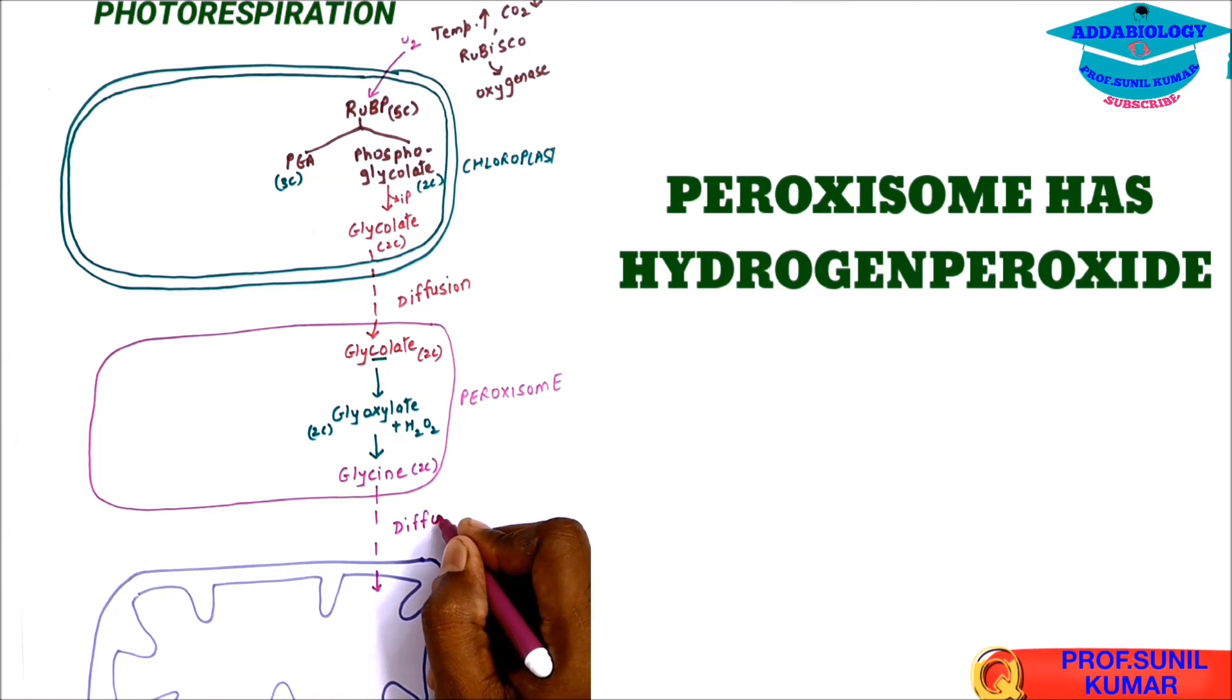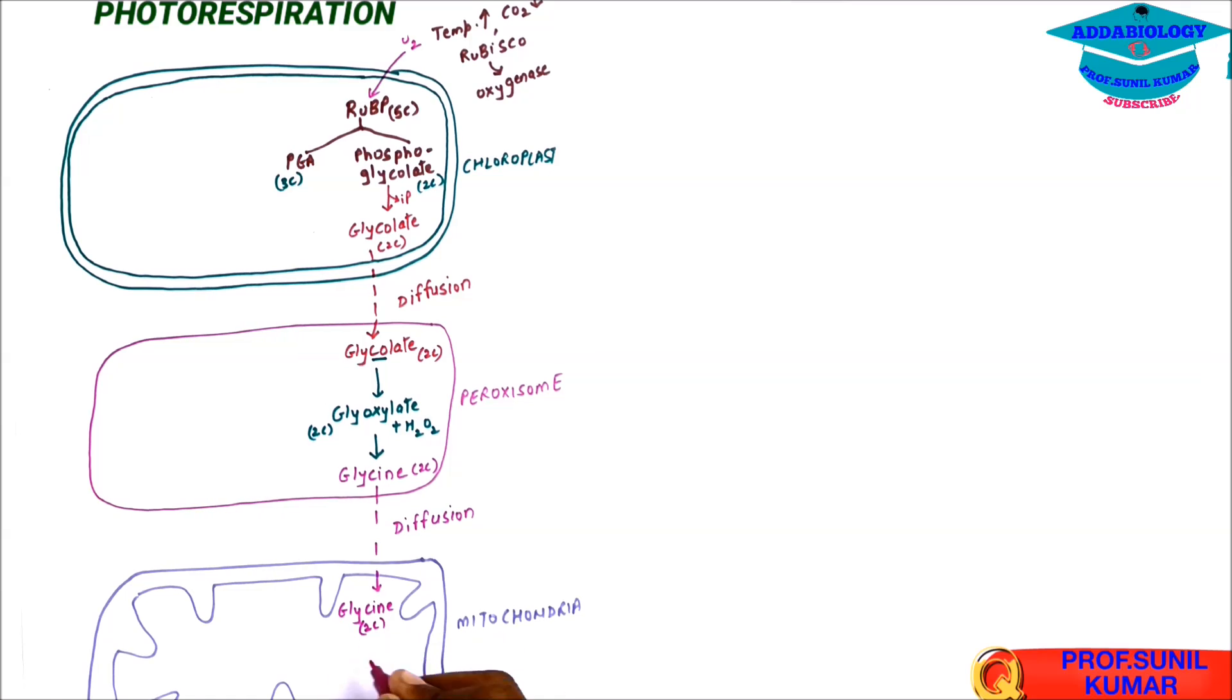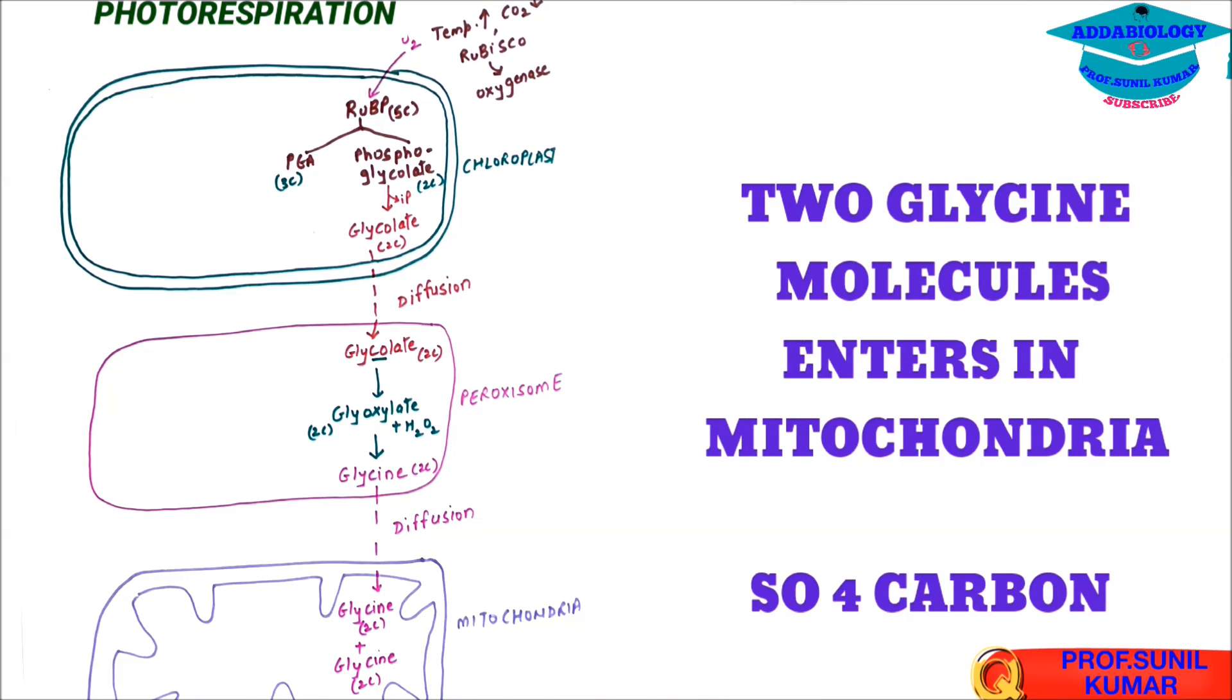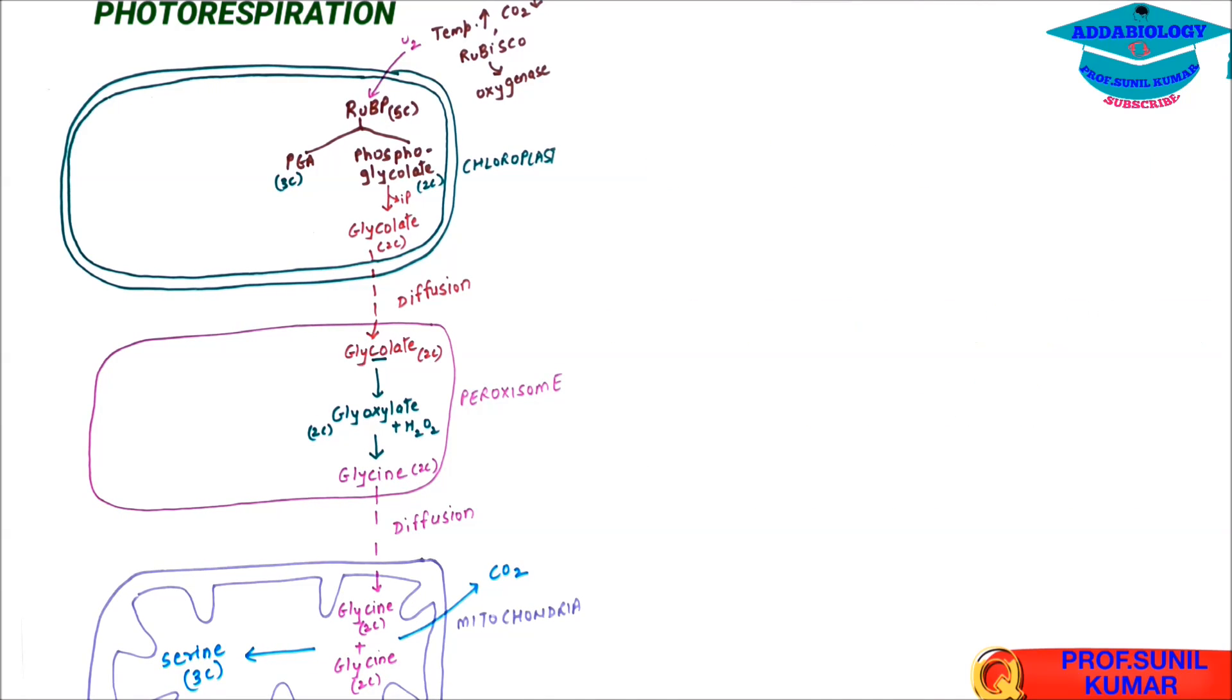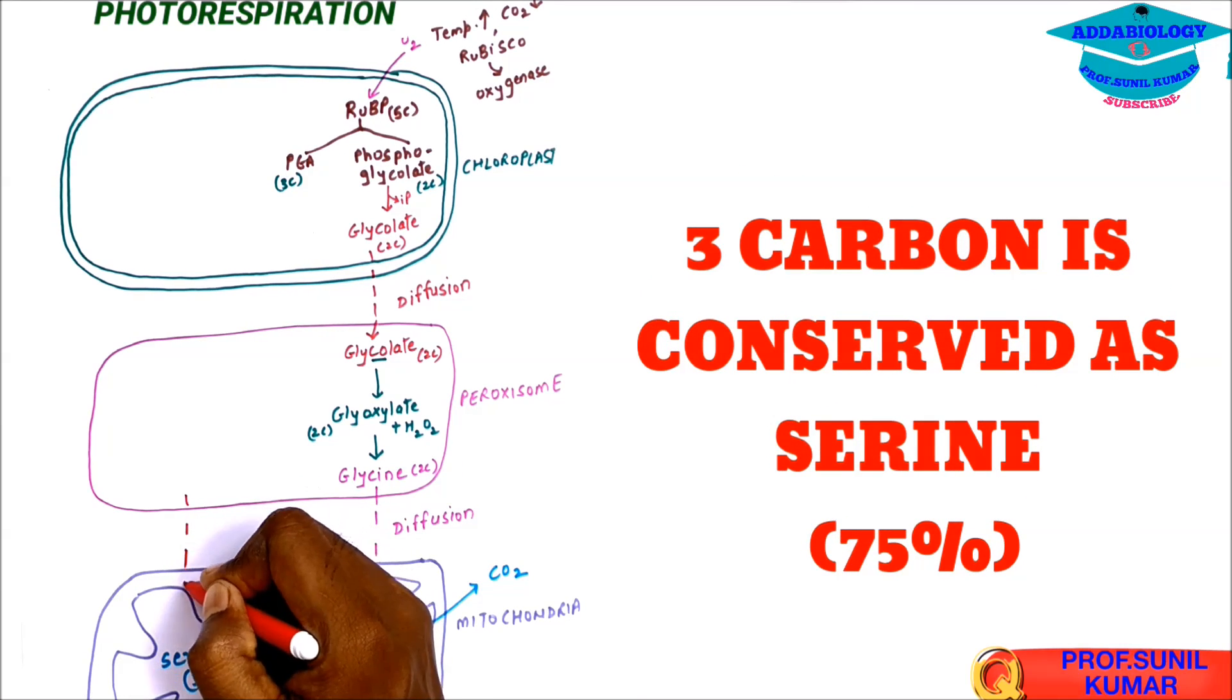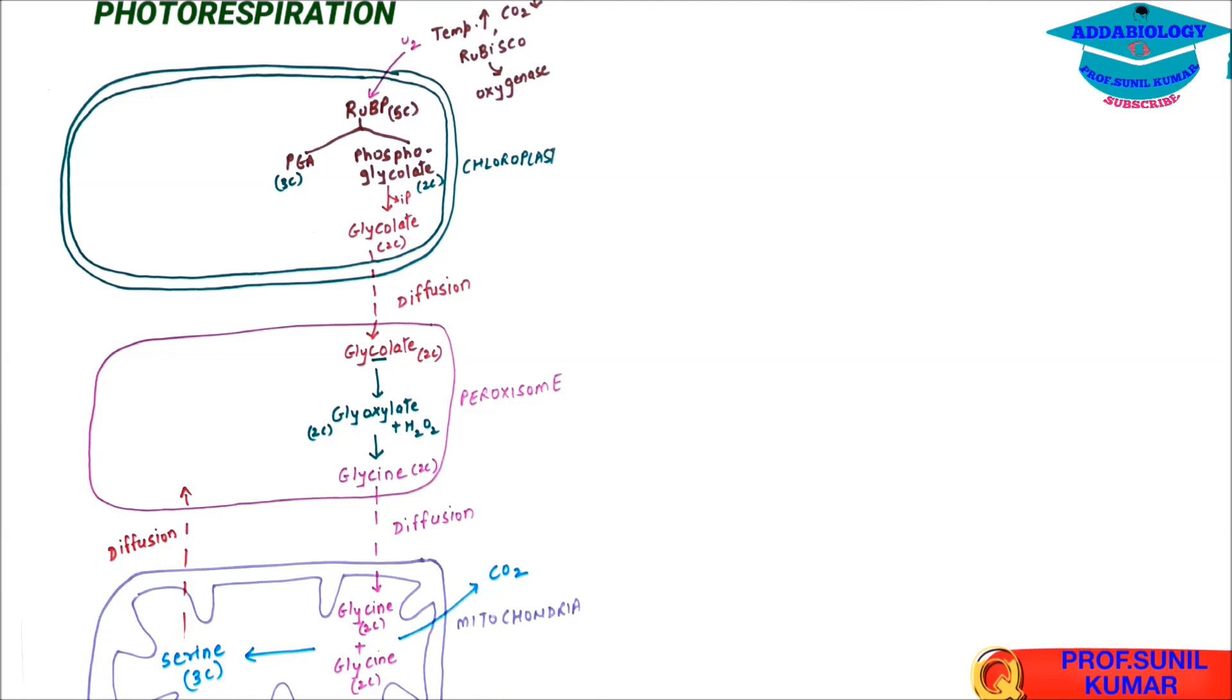This glycine by diffusion will enter in the mitochondria. One glycine molecule has come and second molecule will also come. So there are two molecules of glycine now which is total of four carbon. So out of this, one carbon dioxide is lost and serine is formed which is of three carbon. So 3 is conserved, that is 75%, and 25% is lost.